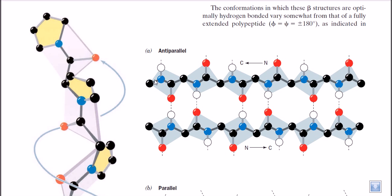If we look at the backbone — N, C-alpha, C — we can trace one amino acid after another. The amino acid from the first layer will interact with the amino acid from the second layer. This interaction is straightforward because they are placed in straight alignment, such that the oxygen of the C=O group finds the hydrogen of the N-H group easily, forming hydrogen bonds through face-to-face interactions.